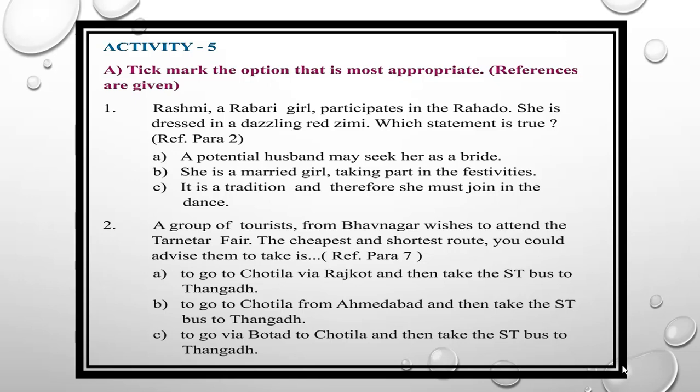The first question: 'Rashmi, a Rabari girl, participates in the Rahadu. She is dressed in a dazzling Rajasthani outfit. Which statement is true?' Refer to paragraph 2. The options are: A — a potential husband may seek her as a bride; B — she is a married girl taking part in the festivities; C — it is a tradition and therefore she must join in the dance. The answer is A: a potential husband may seek her as a bride.